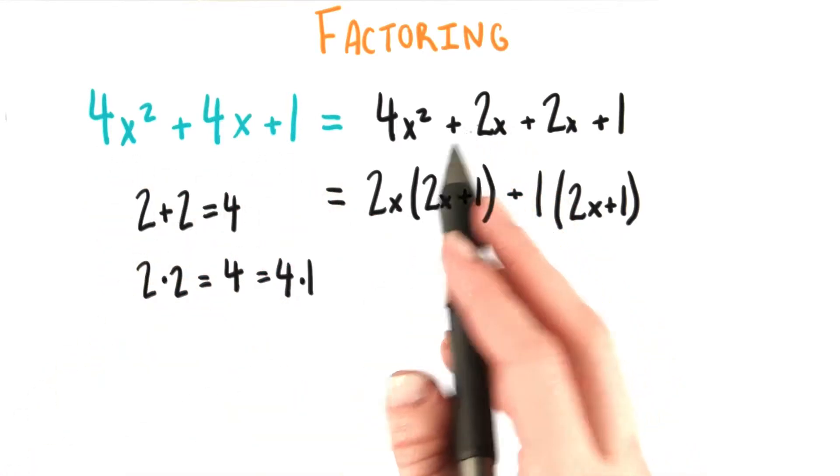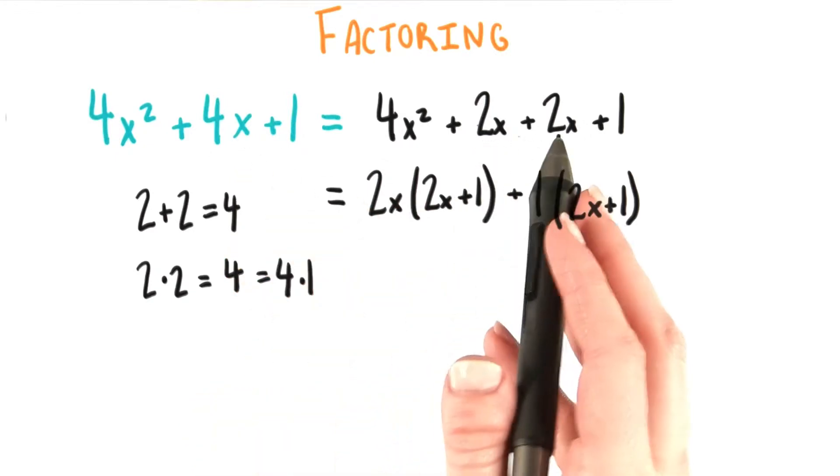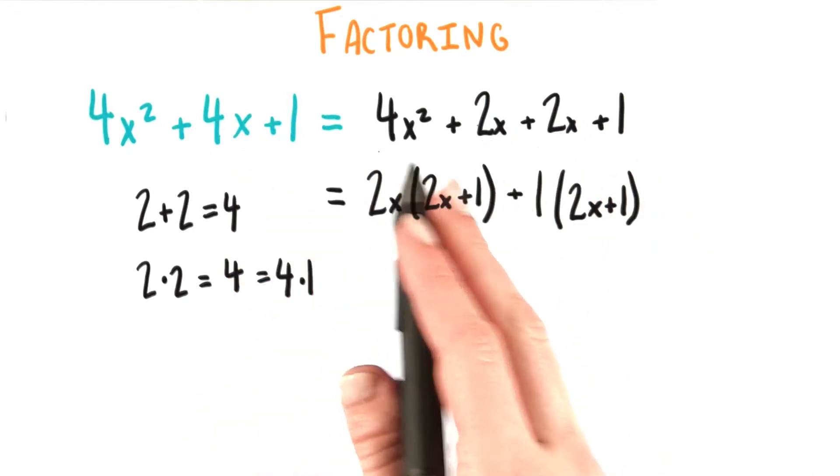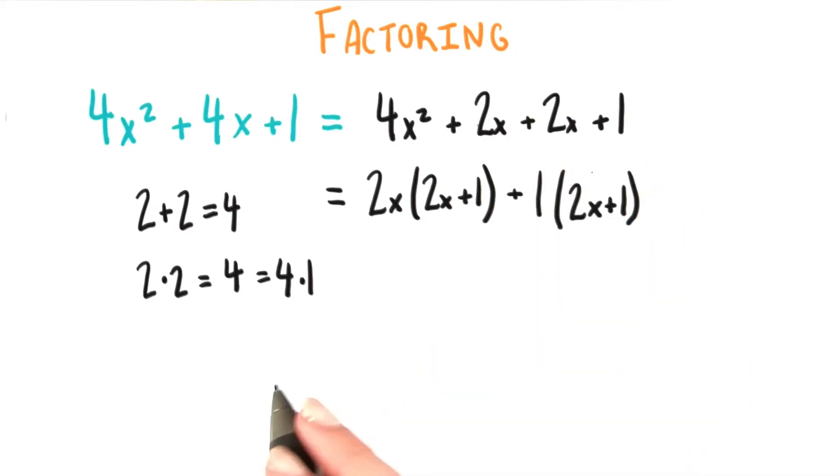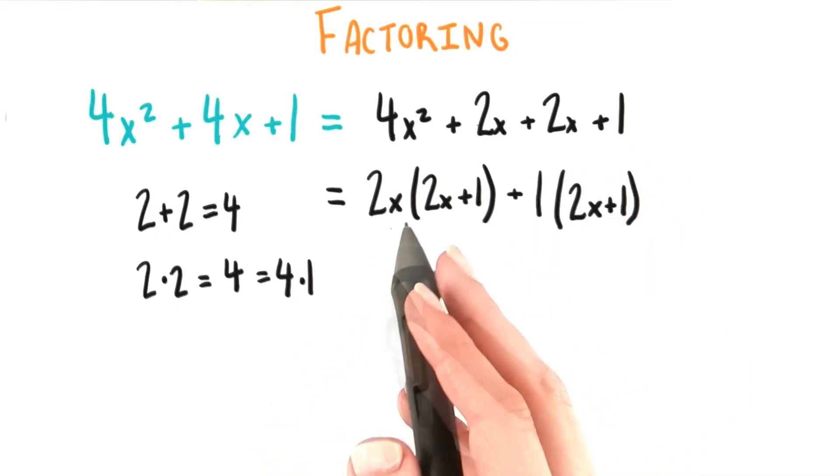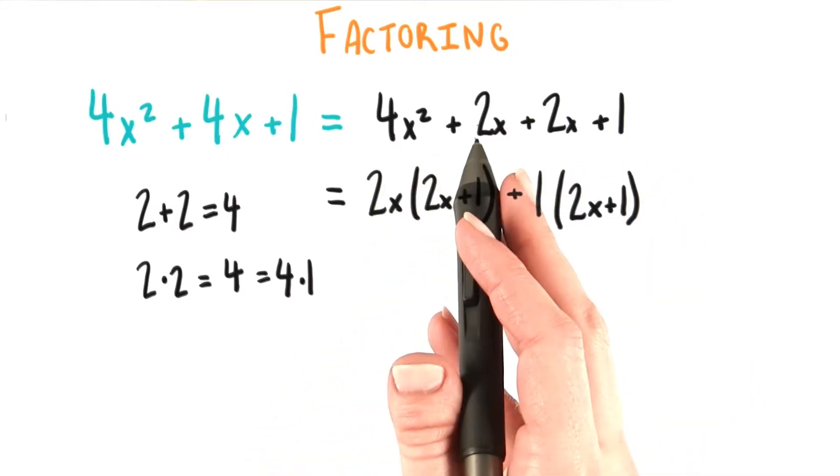So instead of 4x, we can write 2x plus 2x, and of course, the rest of the expression as well. Now, something interesting happens when we try to factor the first two terms and the second two terms. The first two are pretty normal. We pull out a 2x from the 4x squared plus 2x,